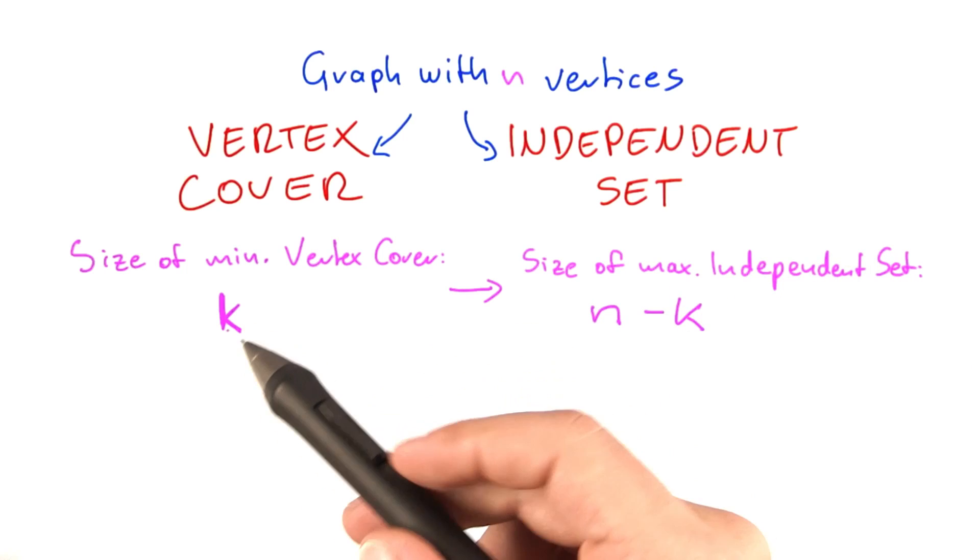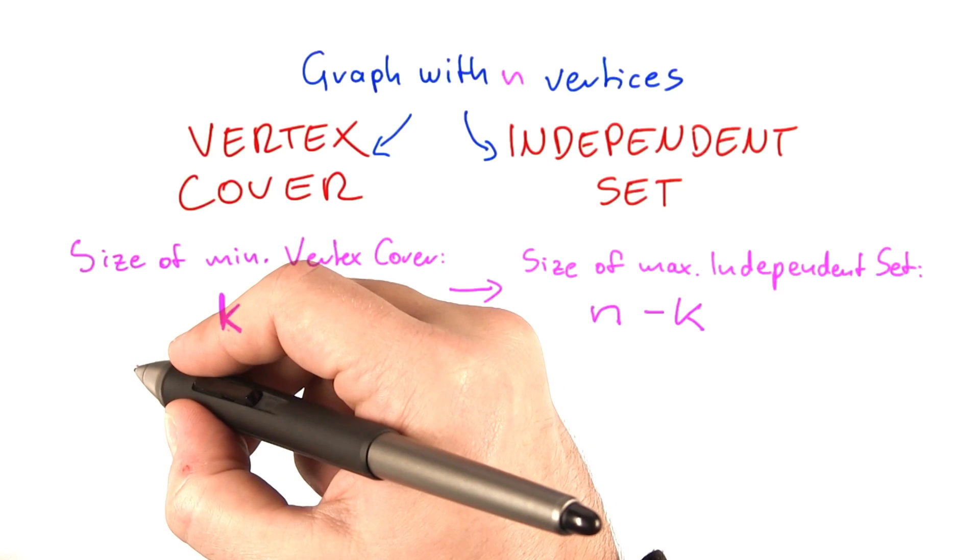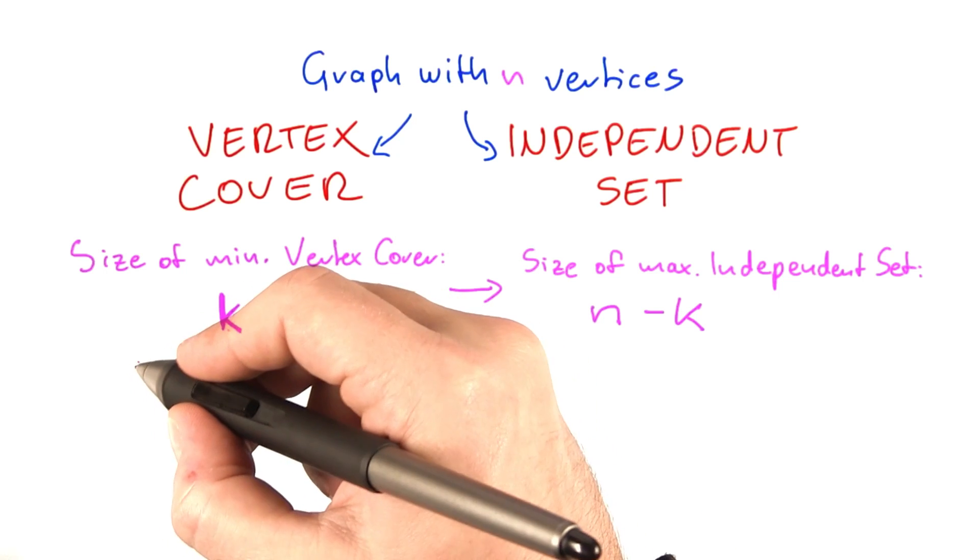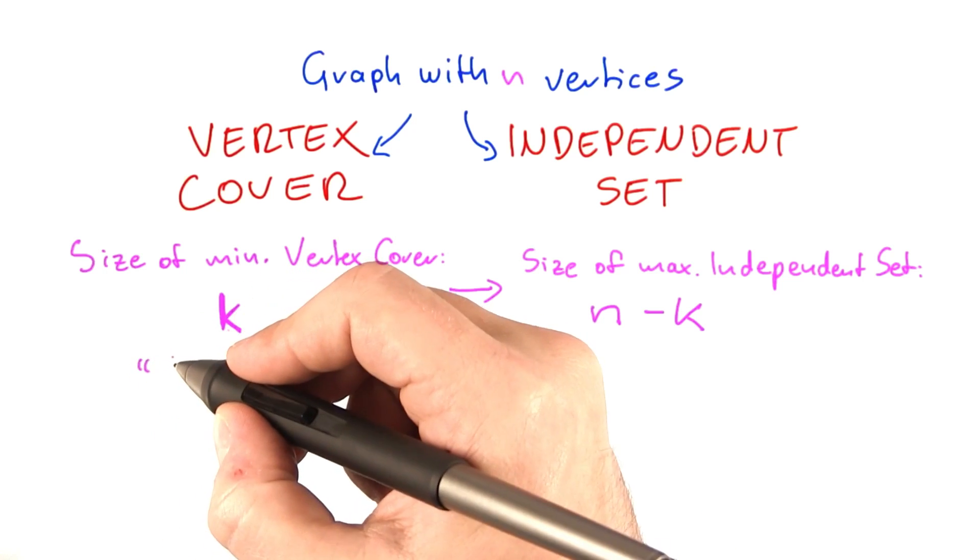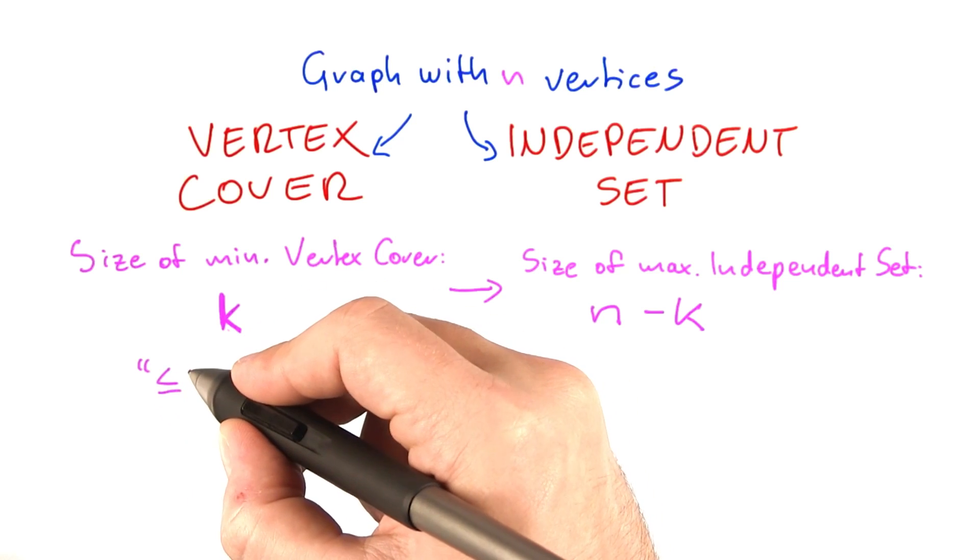Now, instead of finding the smallest possible vertex cover, let's run the factor 2 approximation algorithm. That algorithm will give us a number guaranteed to be less than or equal to 2k.